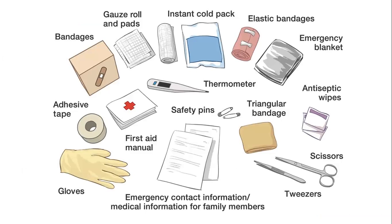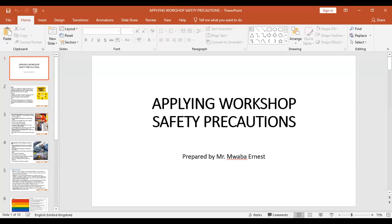Also include painkillers, distilled water for cleaning wounds, and eye wash including eye baths. Looking at the actual picture, you can see a thermometer, safety pins, antiseptic wipes, an emergency blanket, bandages, adhesive materials, and gloves. Don't forget emergency contact information and a manual on how to use the items inside. Having a first aid kit is mandatory for any work area — keep it fully stocked, remove expired materials, and replace them with active ones ready for use.